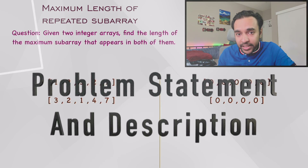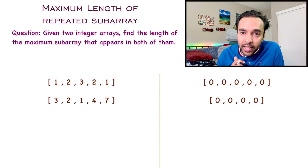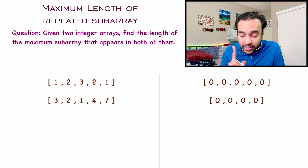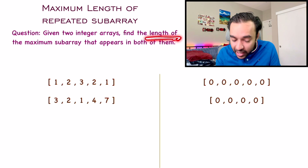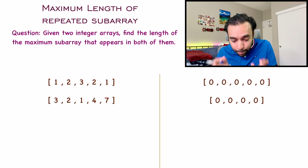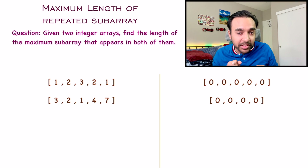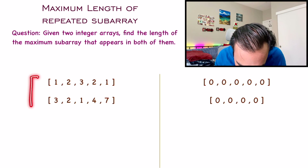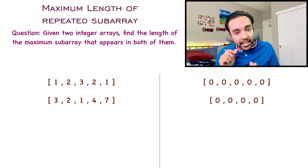First of all, let's quickly make sure that we are understanding this problem statement correctly. In this problem, you are given two integer arrays and you have to find just the length of the maximum subarray that appears in both of them. Let us look at one of the sample test cases. In my first test case, I have these two arrays.